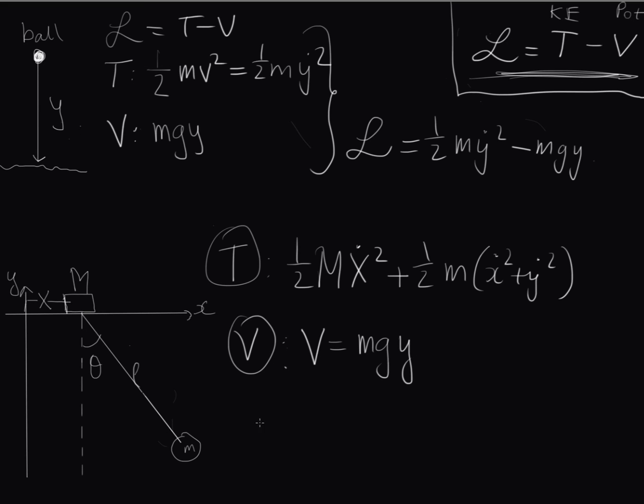So putting that all together we have L is equal to a half big M X dot squared plus a half m little x dot squared plus little y dot squared minus m g y. So that is the Lagrangian for this system here.